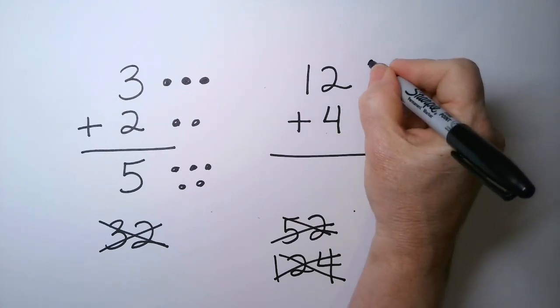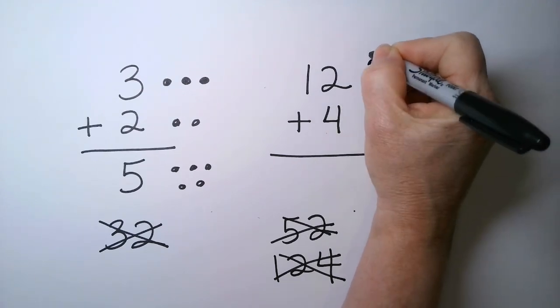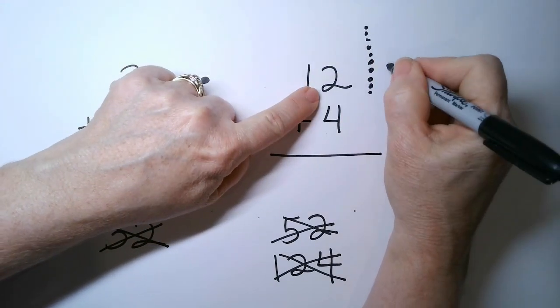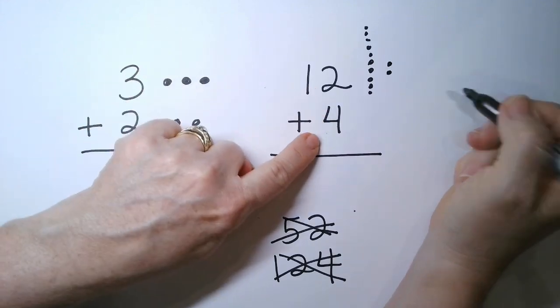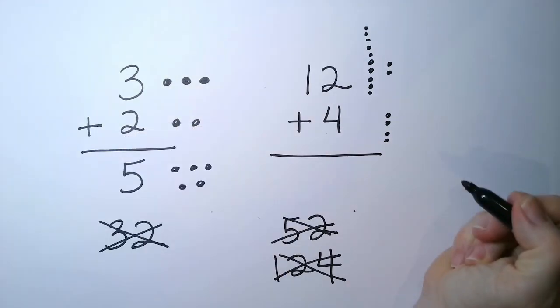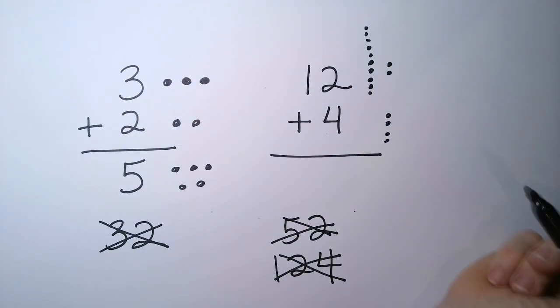This means you have 10 of something. 6, 7, 8, 9, 10. That's what this 1 means. 1 ten and 2 ones. This means that I have 4 ones. And then there's nothing here so there's 0 for the 10.